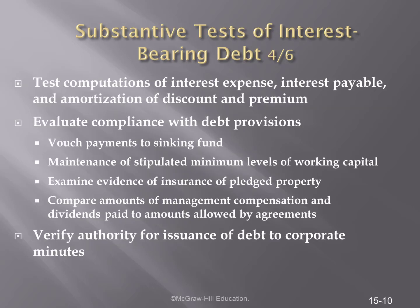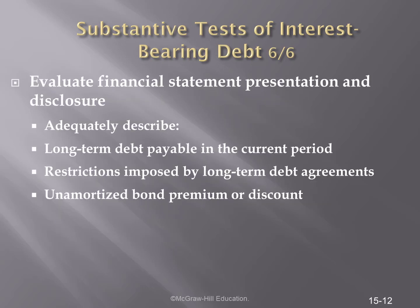Part of our substantive testing related to bond instruments has to do with evaluating compliance with debt provisions. We need to vouch payments to a sinking fund, the maintenance of stipulated minimum levels of working capital, examine evidence of insurance on pledged property, compare amounts of management compensation and dividends paid to amounts allowed by the agreement. Finally, we need to verify the authority for the issuance of debt to the corporate minutes, which means reviewing the board minutes of the board of directors meetings. When we evaluate the financial statement presentation and disclosures, we need to determine that the bonds have been adequately described, the amount of long-term debt paid in the current period, restrictions imposed by long-term debt agreements, and unamortized bond premium and discount.